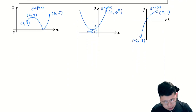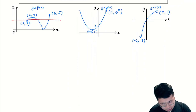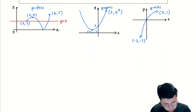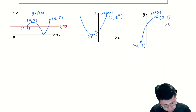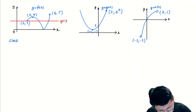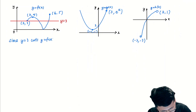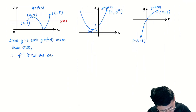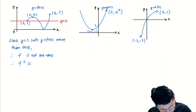For the first function, I'll use y equals 3 as my specific line. Since y equals 3 cuts the graph of y equals f(x) more than once, f is not one-to-one, and therefore f inverse does not exist.